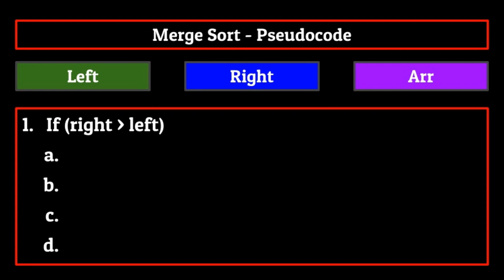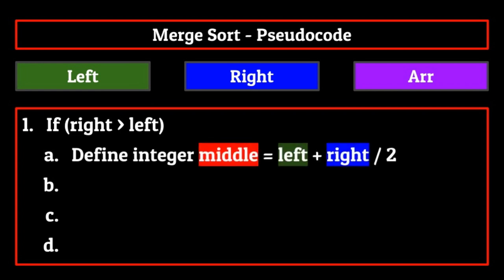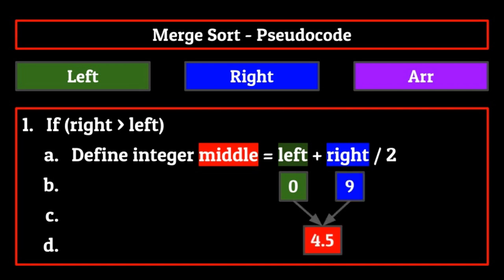Step A is to define an integer middle, which is the midpoint of our array or sub-array. We calculate this by adding the leftmost and rightmost index and dividing by two. Now if the list is odd in length, the computer will simply truncate that index down to the lowest integer value. So if the leftmost index was zero and the rightmost was nine, the middlemost index would be calculated as 4.5, which gets truncated to four, and four is treated as the middlemost value of our sub-array.